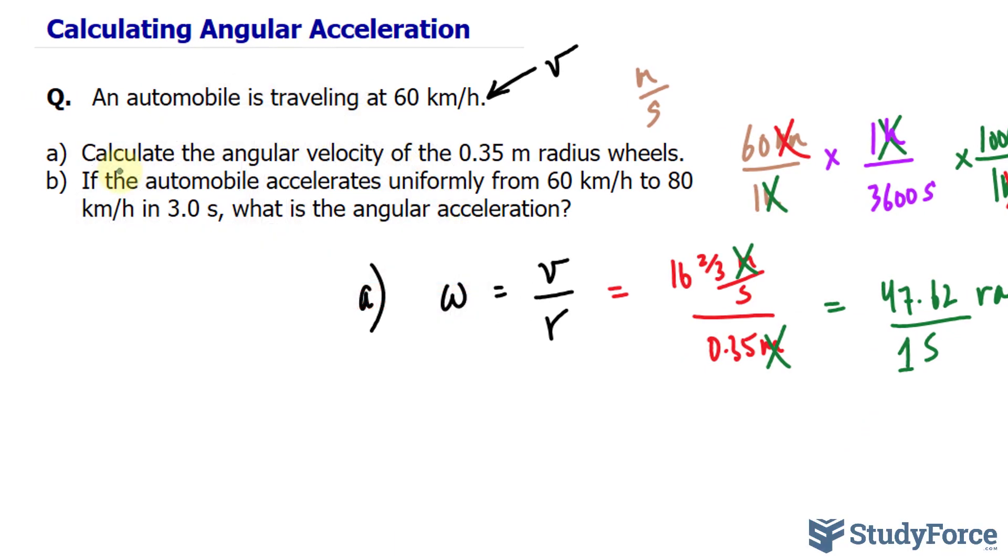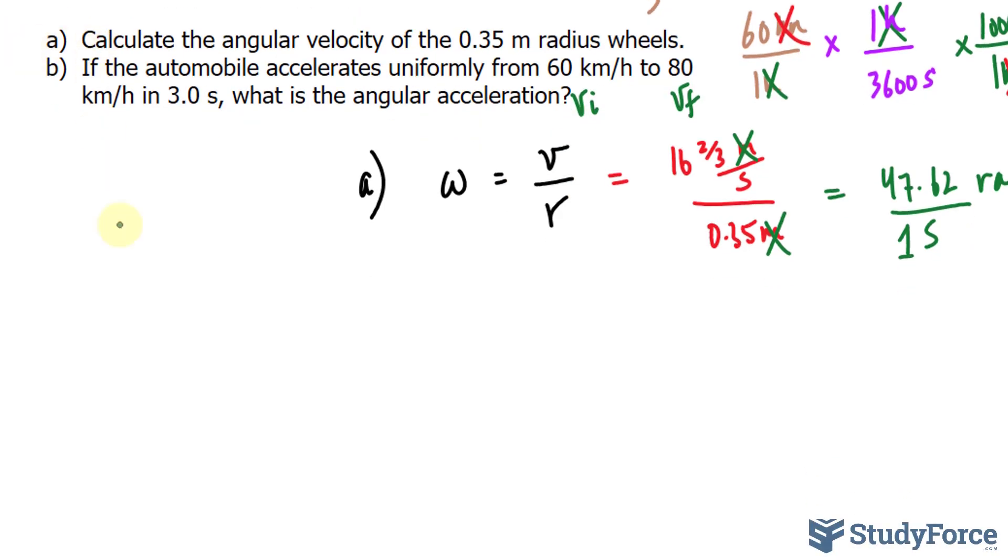So with question B, if the automobile accelerates uniformly from 60 kilometers an hour to 80, so that is final velocity, initial velocity. In 3.0 seconds, what is the angular acceleration? Much the same way as we did with A, we will calculate angular acceleration. I'll represent it as alpha. That's equal to the acceleration over the radius.